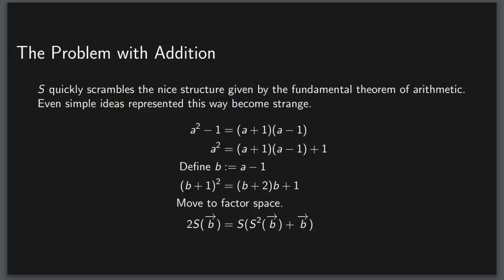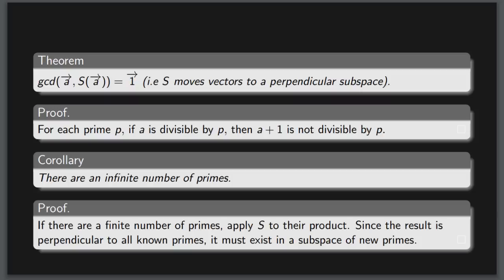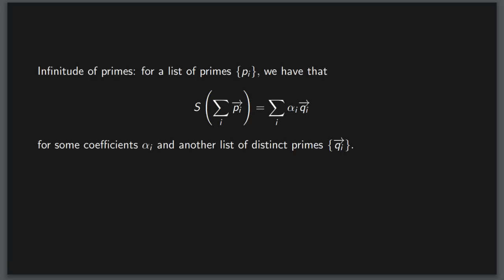By taking a difference of squares, we can arrive at this very strange formula for 2s. Fortunately, even this is still a little useful. We know that a number and its successor are coprime, meaning that anything that divides the original number can no longer divide its successor, which means that s always moves a vector to a perpendicular subspace. It also tells us that we can always produce new prime numbers by applying s to a product of known primes, which must exist in a new frontier of primes. That formula of the infinitude of primes shows itself like this.